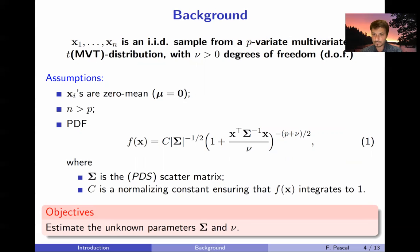So the PDF of the T-distribution is as follows. It depends in that case on two unknown parameters, both sigma the scatter matrix and nu. Sigma is a positive definite symmetric matrix and we have also this normalizing constant with closed form expression that is well defined and ensuring that this is a PDF. The objective of this work is to estimate both those unknown parameters sigma and nu.